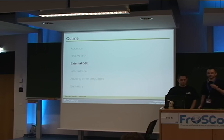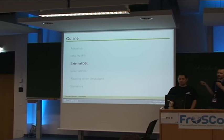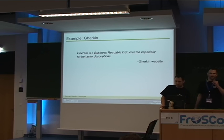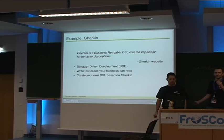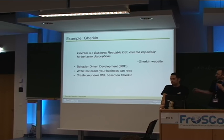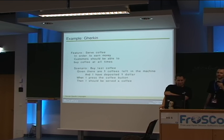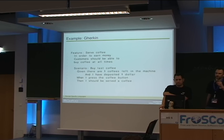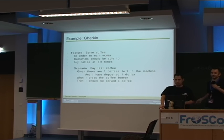External DSLs — which is what we just covered — you can embed them, but you don't have to. The example we want to show you which suits business communication is Gherkin. Gherkin is a business-readable DSL created especially for behavior descriptions. You use it for behavior-driven development, which means you can express business rules and preconditions and postconditions with tests. Gherkin allows the business people to define the specs actually. You have a feature 'serve coffee,' and then 'in order to earn money, customers should be able to buy coffee at all times.' There's a scenario: 'buy the last coffee given there's one coffee left in the machine and I have deposited one dollar. When I press the coffee button, then I should be served a coffee.'